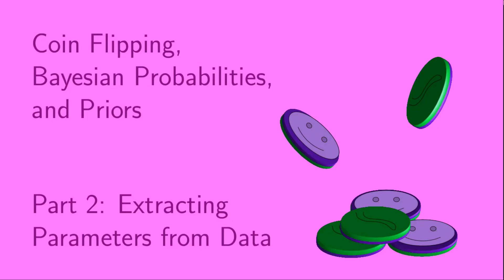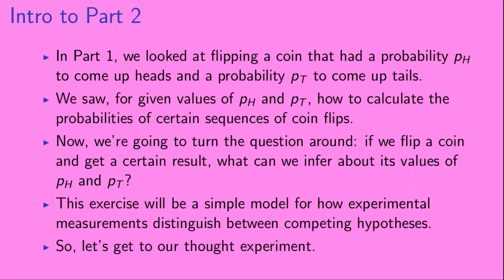Hi. Welcome to Coin Flipping, Bayesian Probabilities, and Priors, Part 2. So in Part 1, we looked at flipping a coin that had a probability pH to come up heads and a probability pt to come up tails. We saw, for given values of pH and pt, how to calculate the probabilities of certain sequences of coin flips. Now we're going to turn the question around. If we flip a coin and get a certain result, what can we infer about its values of pH and pt? This exercise will be a simple model for how experimental measurements distinguish between competing hypotheses.